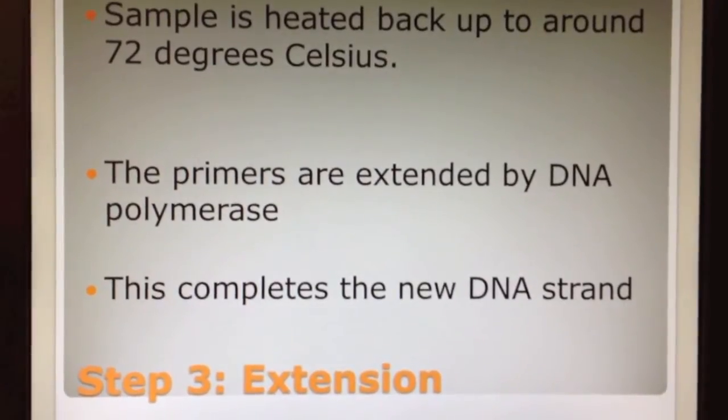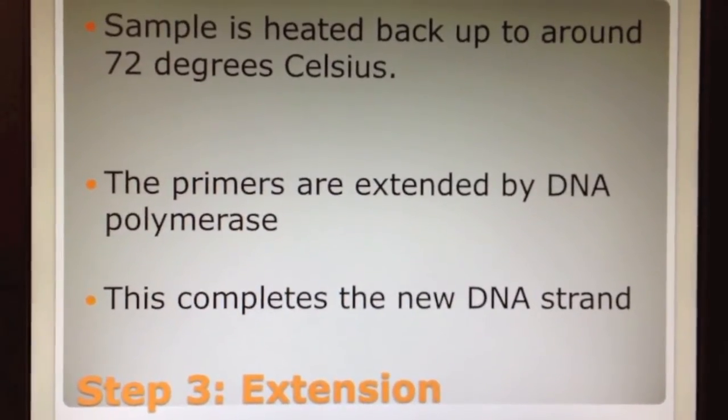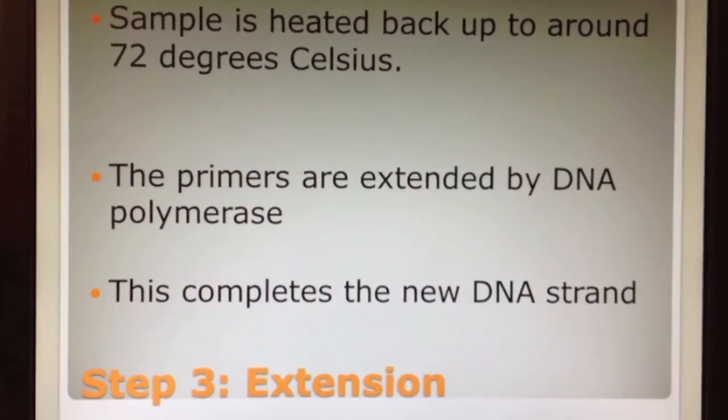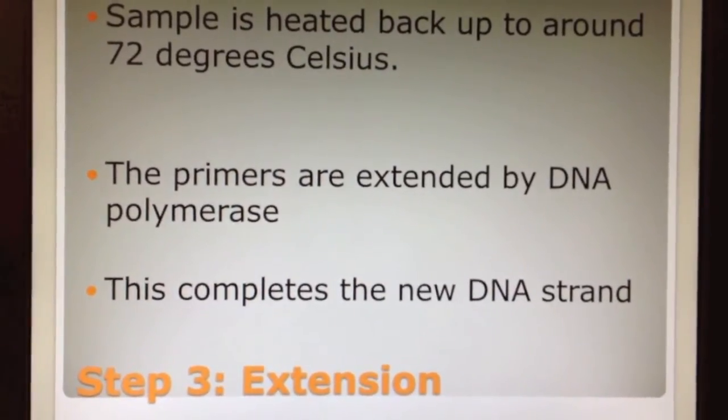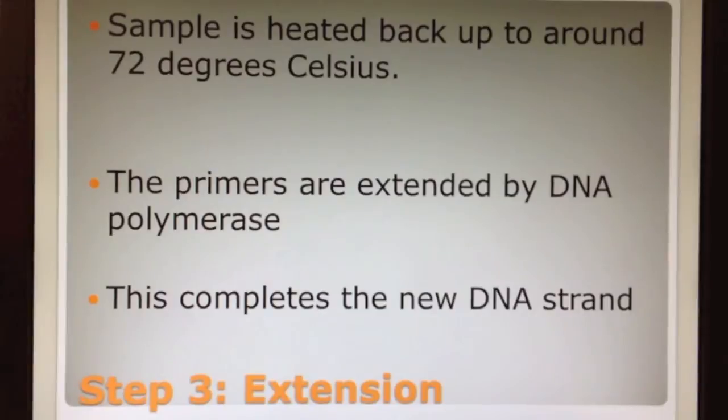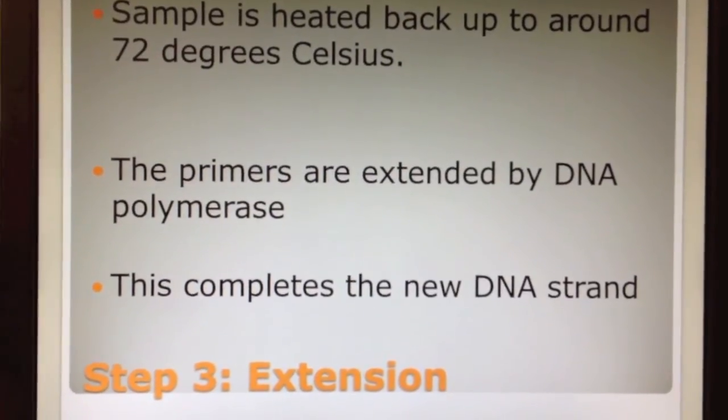Finally, in the last step of the cycle, extension, the DNA is heated back up to around 72 degrees Celsius. The primers are then able to be extended down the strand by DNA polymerase. This completes the new strand of DNA.